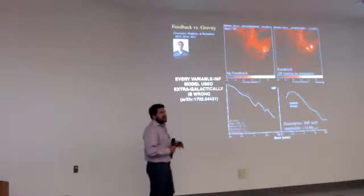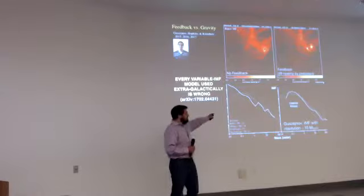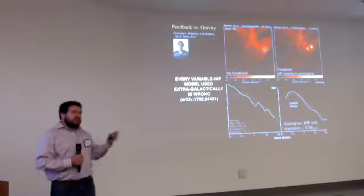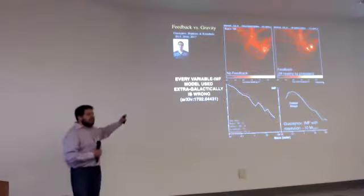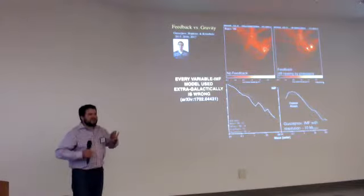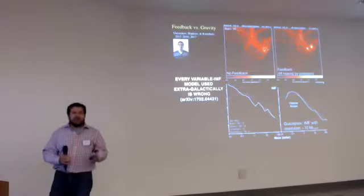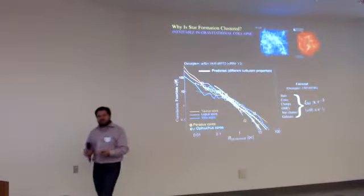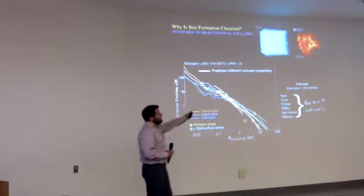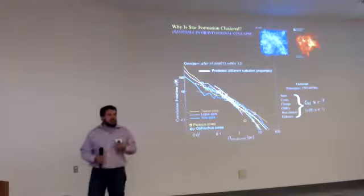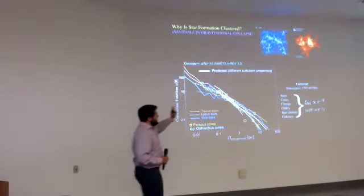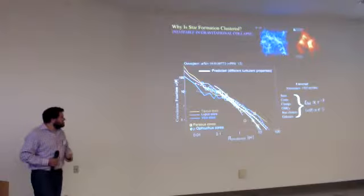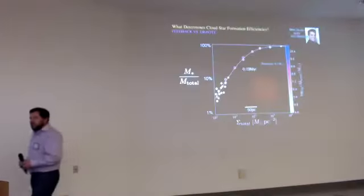There's a very narrow subclass of models discussed in the literature — feedback-regulated models — that survive that test. It's really worth thinking about, because there's been a lot of excitement about potential IMF variation in nearby centers of massive ellipticals. We need to think, before we run around and write papers about how we could explain that, whether our model can even survive the local tests of nearby IMF variation. He's also done work on why star formation is clustered: gravitational collapse is an inherently hierarchical process, and there's a ludicrously universal correlation function for basically all self-gravitating hierarchical structures, extending from a hundredth of a parsec to kpc scales.